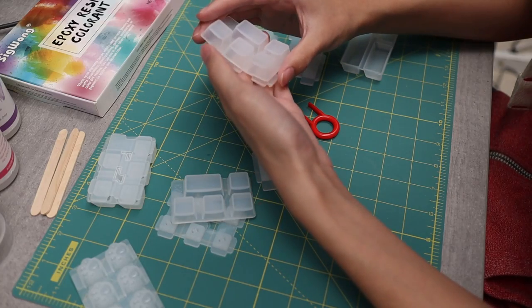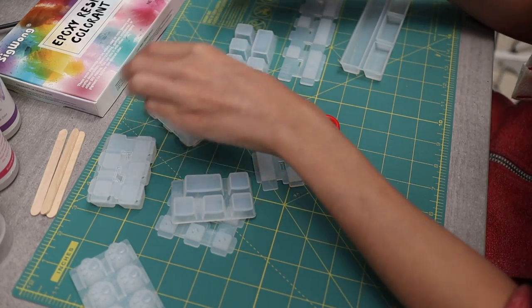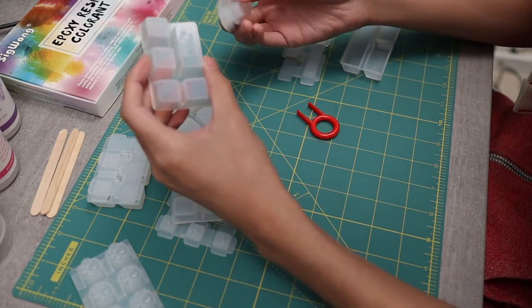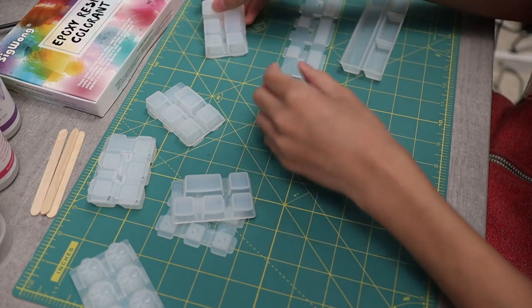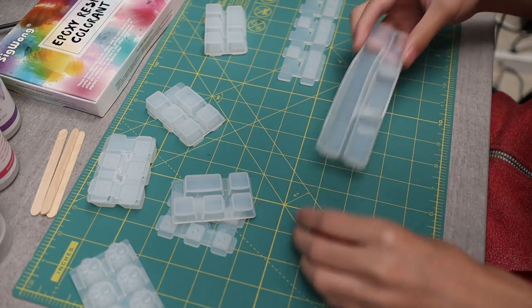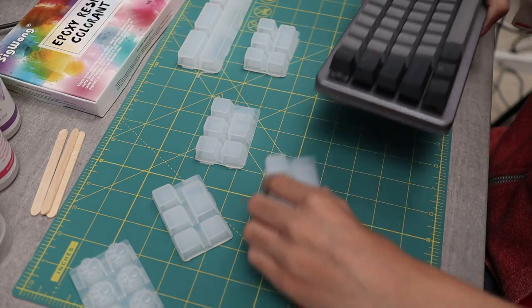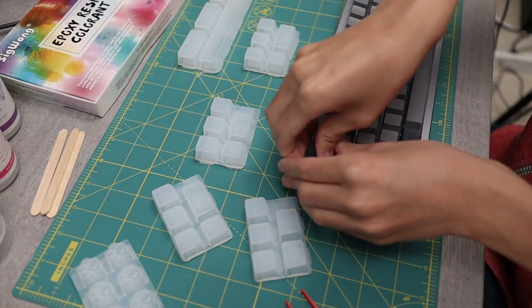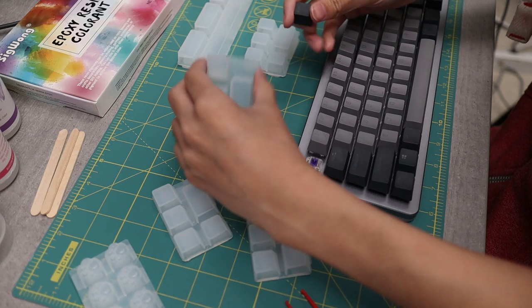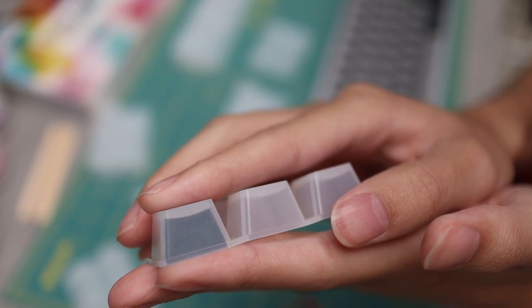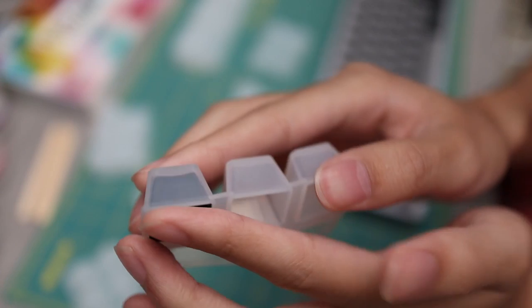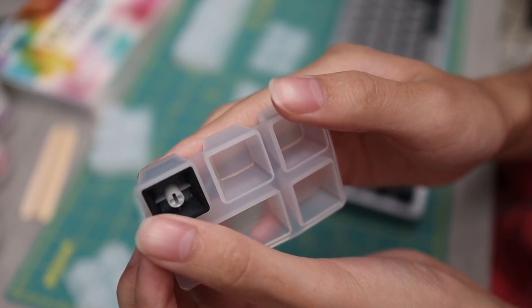Okay, now let's get started. I unpacked the keycap molds and I matched the tops and bottoms together. Keep in mind that these are for cherry profile switches and they do cover a couple of different row sizes. So a really great trick to do is to take a keycap that you already have and just put it inside the mold. And as you can see here, my escape key fits inside this mold really well and is flush with the bottom. So now I know exactly which size I'm using.